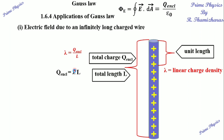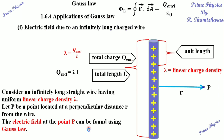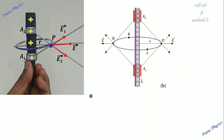q enclosed is equal to lambda into L. In this wire, we consider a point P at distance r. The perpendicular distance is r. For this unit length we find the electric field, using Gauss's Law.